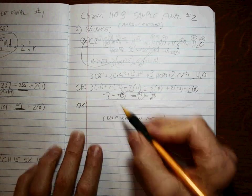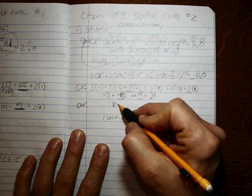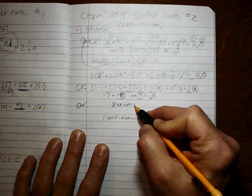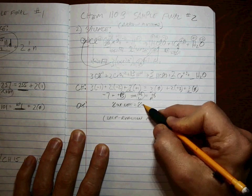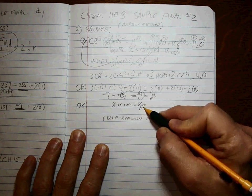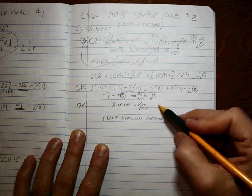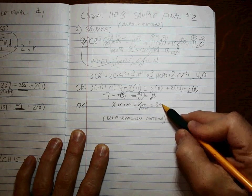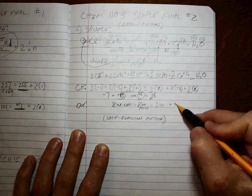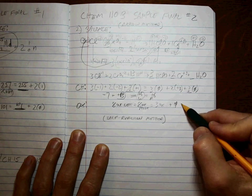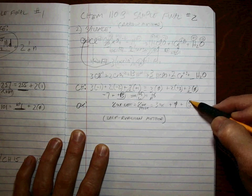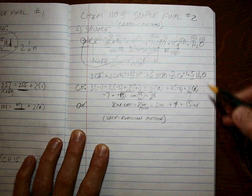Okay, then we do oxygen. There's a total of eight oxygens on the left, which means we need eight oxygens on the right. There's three oxygens here, plus zero oxygens, plus, well, you need five oxygens. That five comes up here, and it's five.